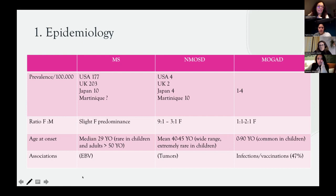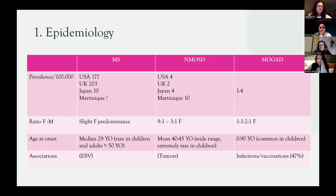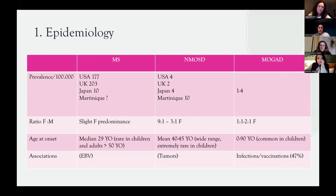Regarding triggers: the trigger is mostly unknown. EBV infection is much more associated with multiple sclerosis than in the general population. For NMOSD and MOGAD there are no EBV studies yet, though we would like to perform some. In NMOSD, in most cases there is no trigger, though some tumors have been found in older patients. For MOGAD, onset can follow infections or vaccinations in around half of cases — infection seems to trigger the immune system to produce antibodies against MOG.